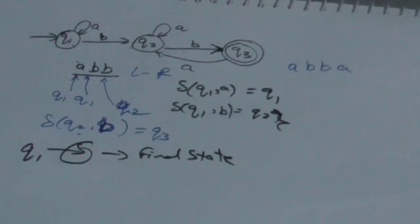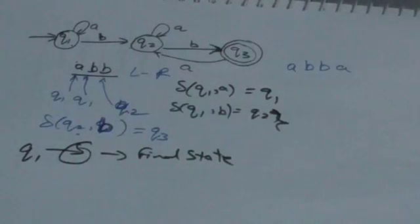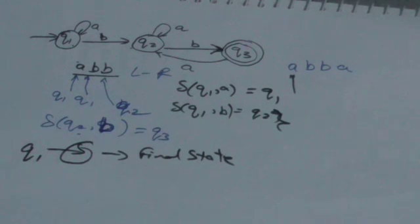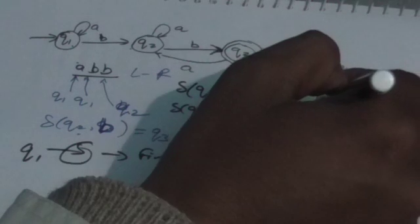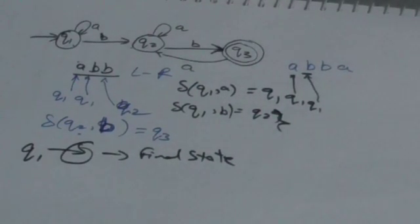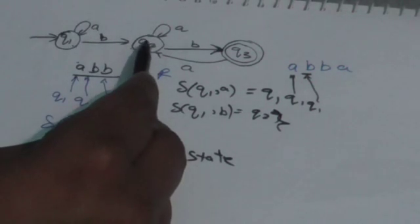Now let's trace another input string 'abba'. The machine starts from the initial state q1. First it reads 'a': delta(q1, a) = q1, so it remains in q1. Then it reads 'b': delta(q1, b) = q2, so it jumps to state q2.